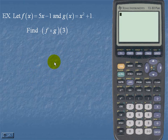For example, let f of x equal 5x minus 1 and g of x equal x squared plus 1. Here we are to find f circle g of 3.